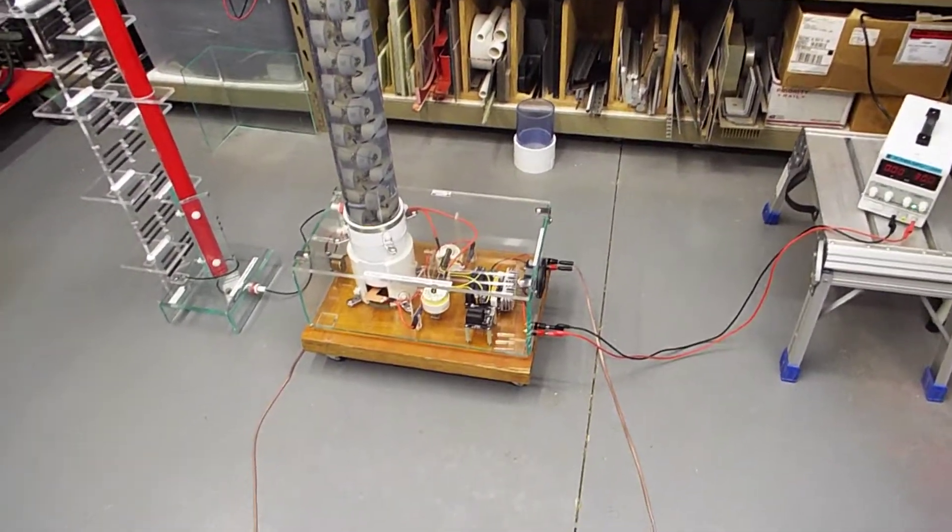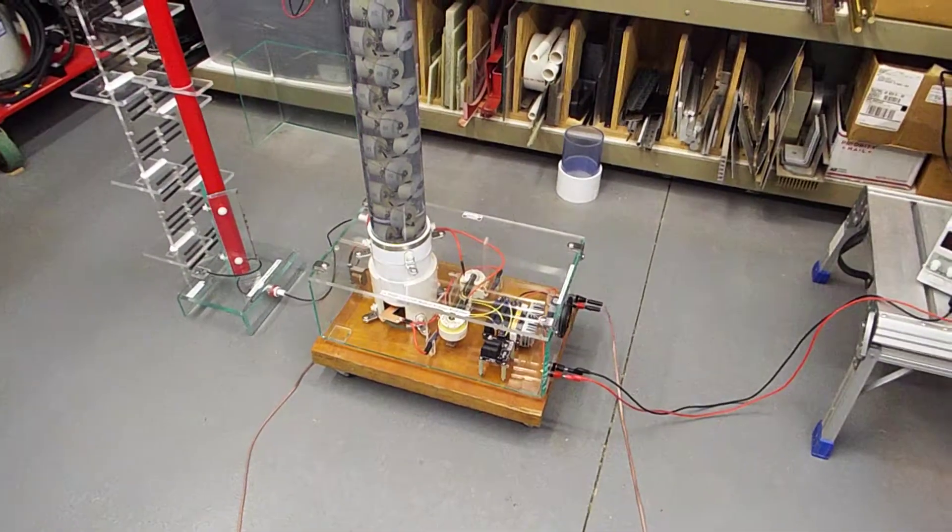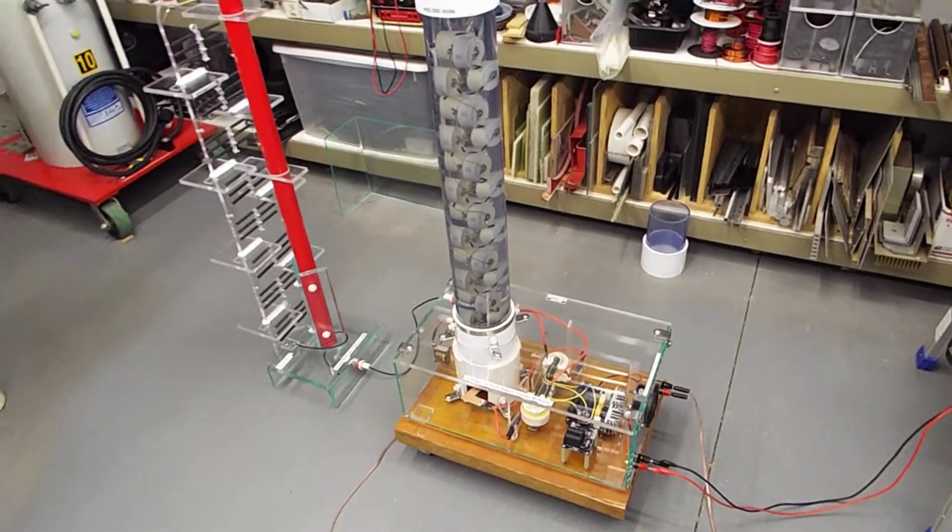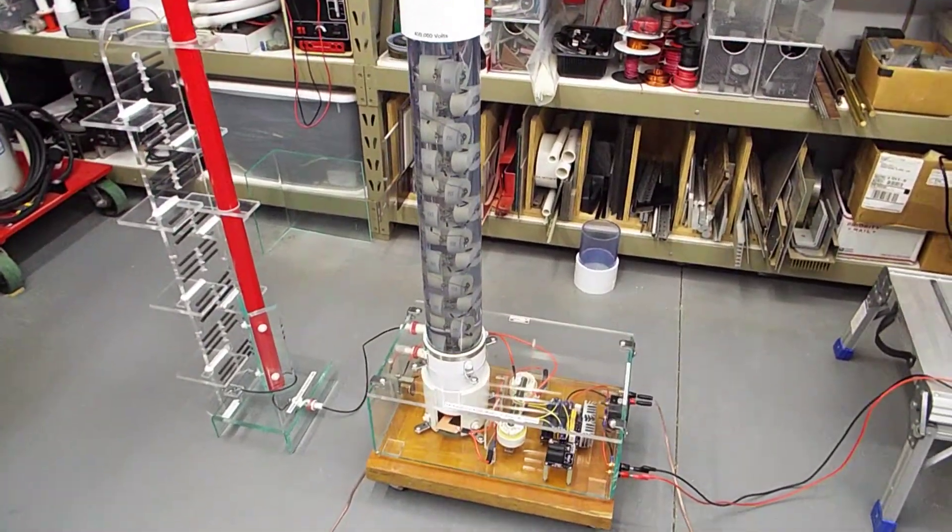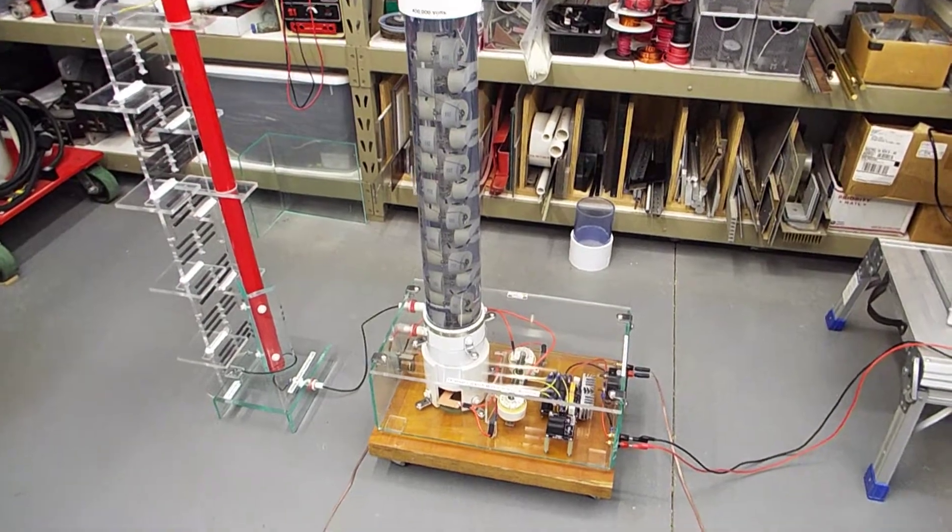This is an overview of my Cockroft Walton voltage multiplier. It's 14 stages. There's 28 capacitors, a whole lot of diodes.